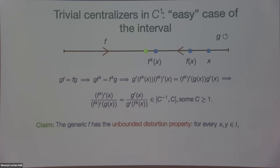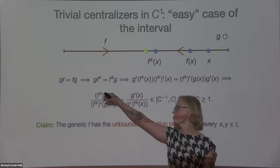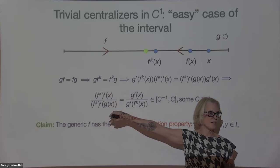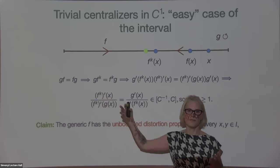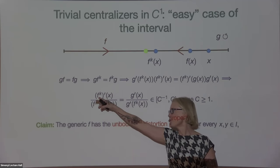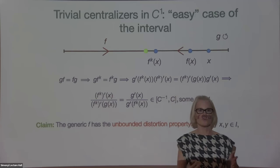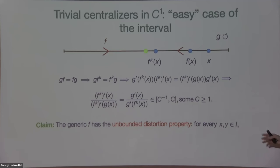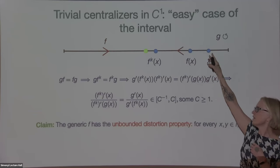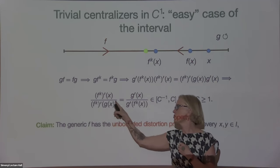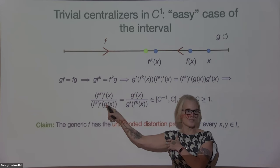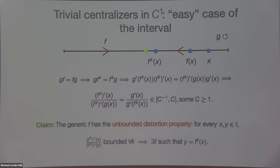The claim is that having this ratio bounded is highly non-generic. The generic F has what I'll call the unbounded distortion property. This type of ratio — taking a very high iterate and looking at derivatives at two different points — should blow up, because by the chain rule this is a product of derivatives of F along two different orbits. For C2 diffeomorphisms in exactly this type of setting, if G(X) is close to X, the ratio will actually be bounded — so there's no contradiction. But in the C1 setting there is a problem. The only way the ratio stays bounded is if G(X) is on the orbit of F, meaning you've just removed a few terms in the denominator.